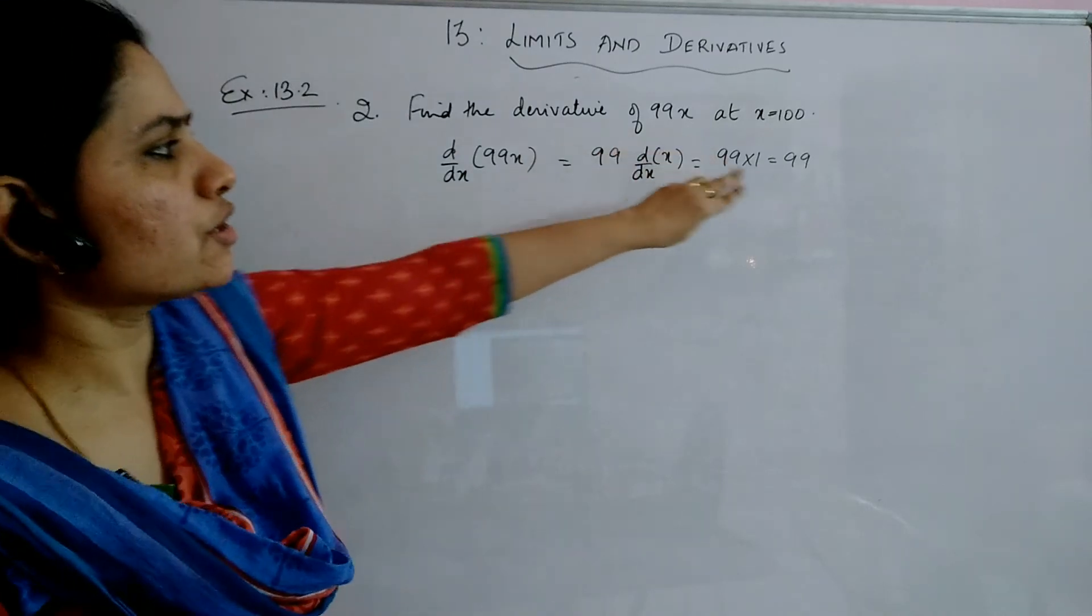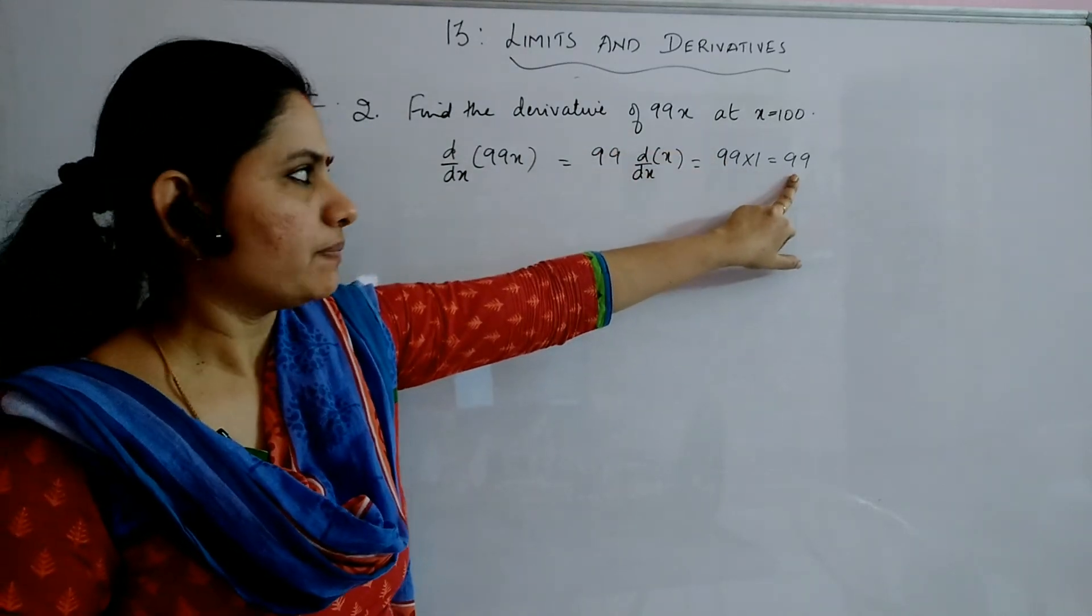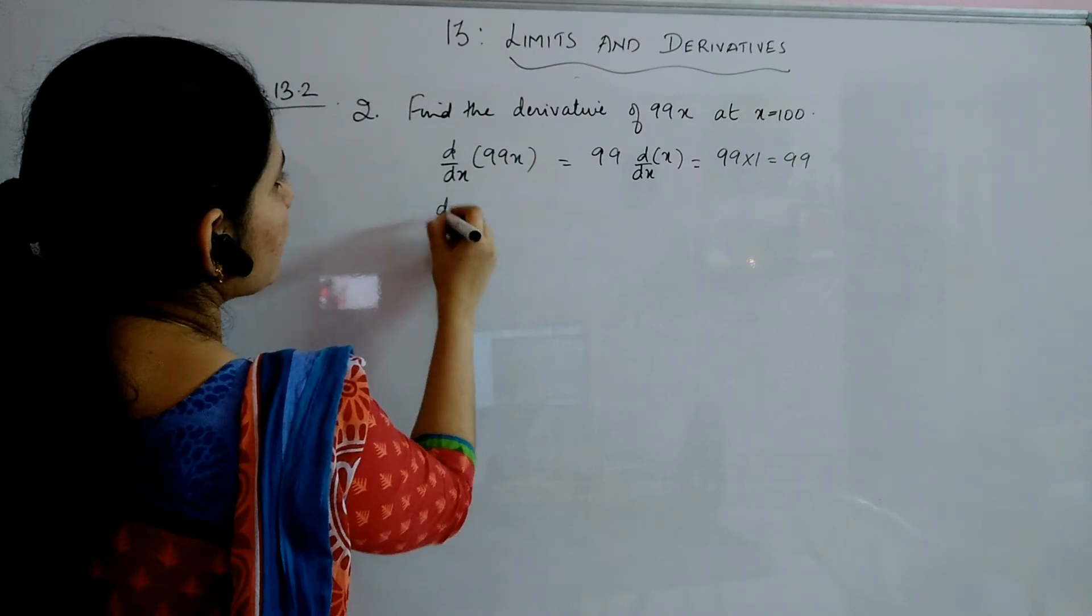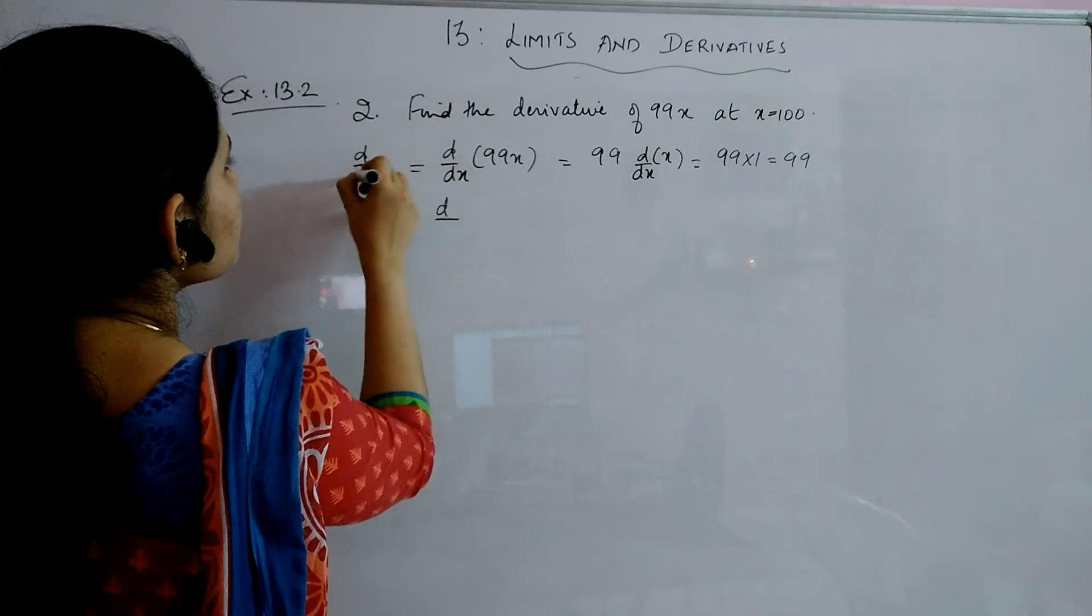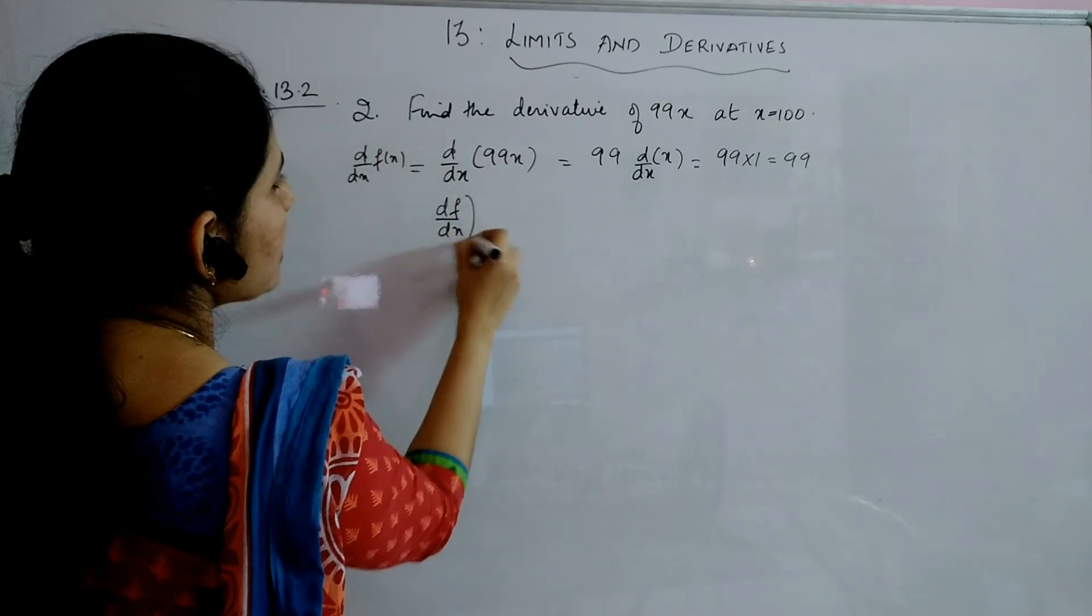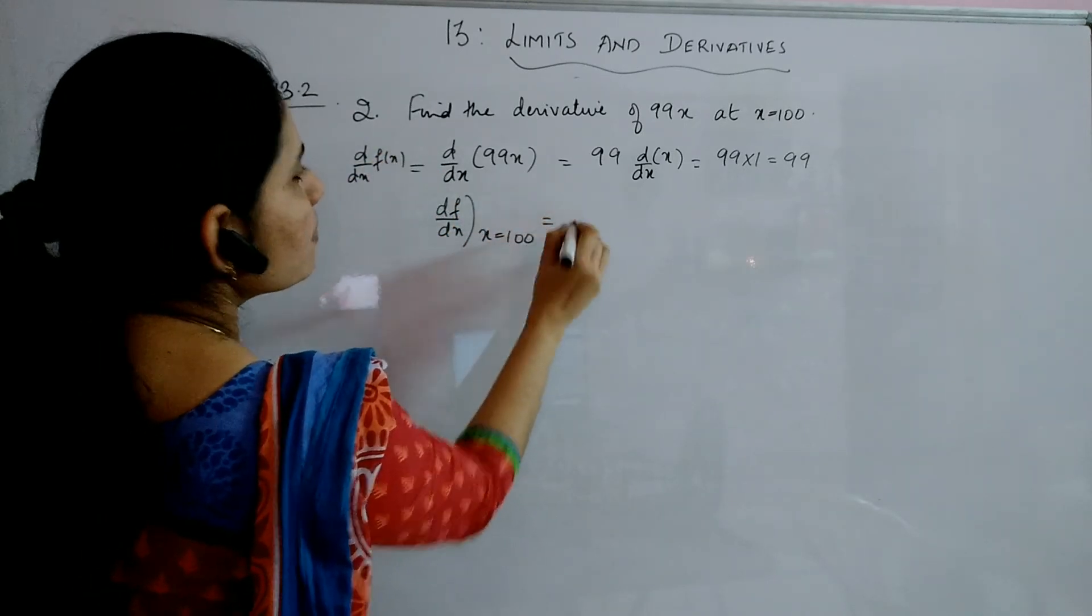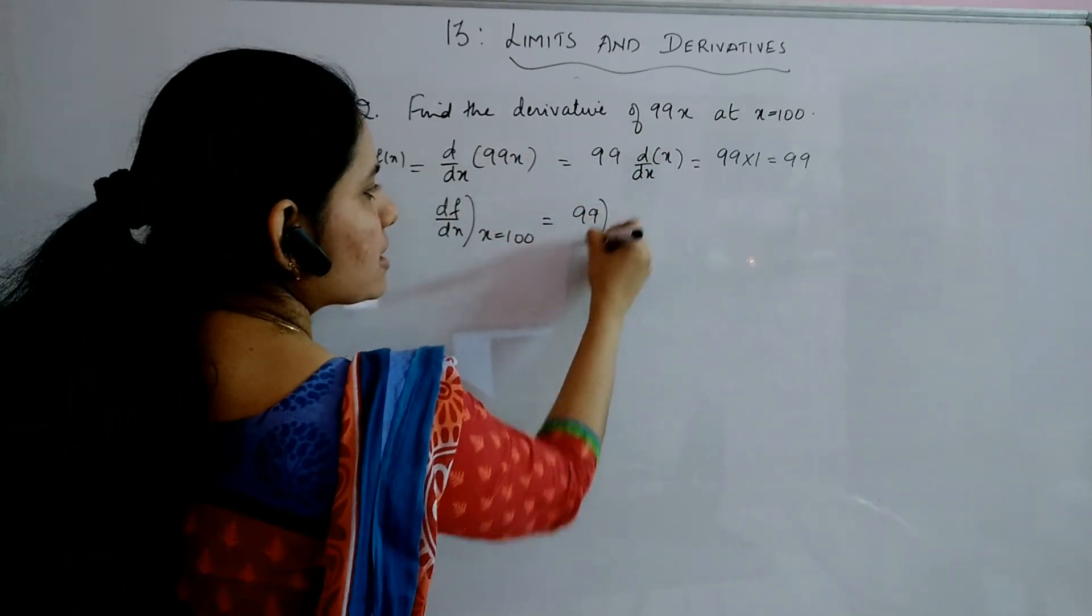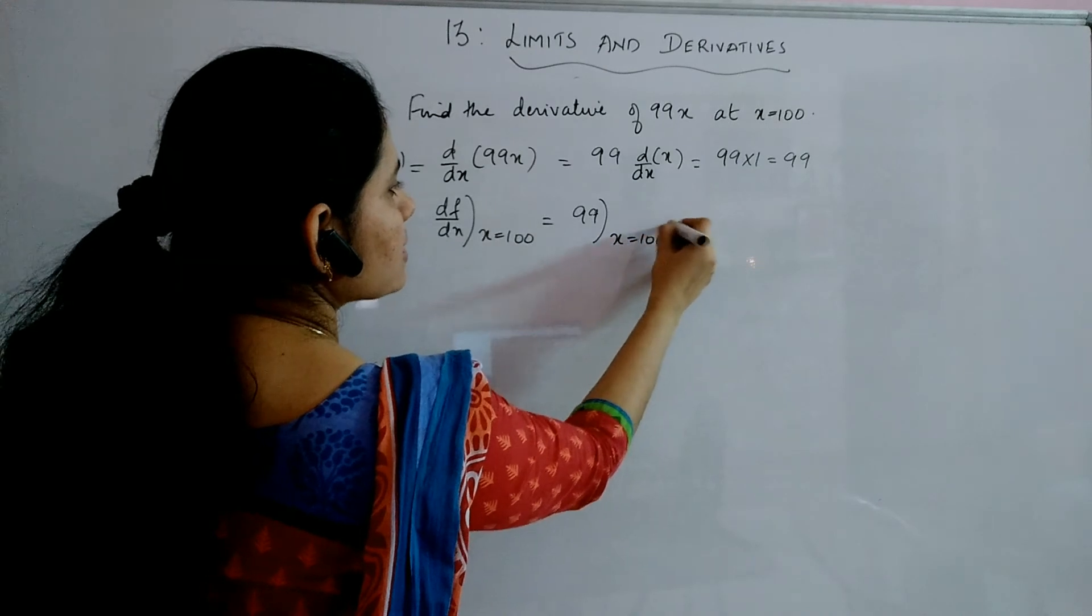Now, just see in your answer you are not having any x term. So at x, that is d by dx of f of x, you can write that df by dx at x equal to 100 means you have to replace x in your answer. But can you find any x in the answer?